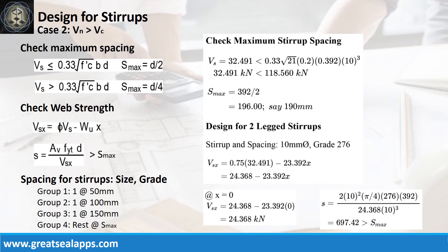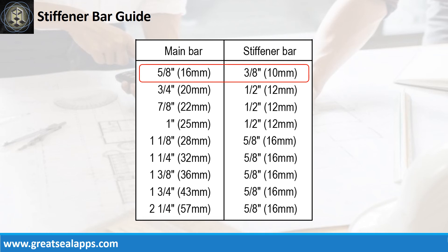The maximum stirrup spacing is 190 mm. The web reinforcement spacing schedule is: 1 at 50 mm, 1 at 100 mm, 1 at 150 mm, then rest at 190 mm. For 16 mm main bars, use 10 mm stirrup bars.